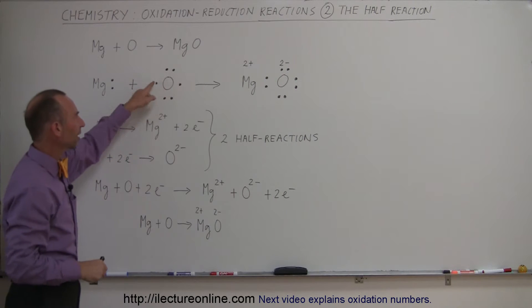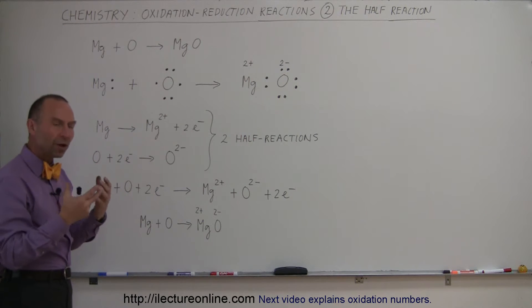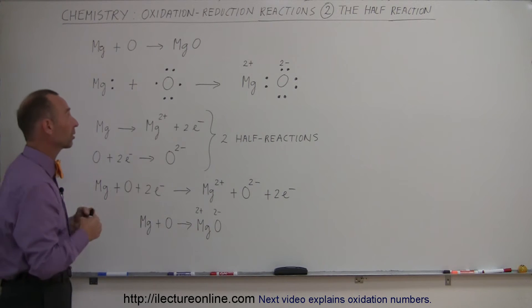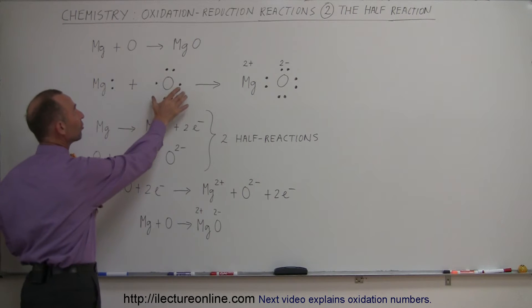Oxygen has six electrons in its valence band and it really wants those two extra electrons. It has a strong pull to pull in two additional electrons, which means oxygen is the oxidizer and magnesium is the reducer.